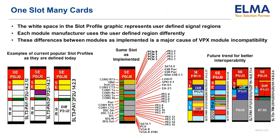A recent trend is moving away from slot profiles with a lot of open user-defined areas and towards slot profiles that are more fully defined. This will increase compatibility and help bring the slogan 'one slot, many cards' closer to a reality. Notice that the three slot profiles on the left have a lower J2 section that is completely undefined as represented by the open white space. Even in the J1 region, there is some open space in each of the three slot profiles. The middle figure with all the extension lines is an example of signal assignments as implemented by one manufacturer, showing how every possible signal position is used.